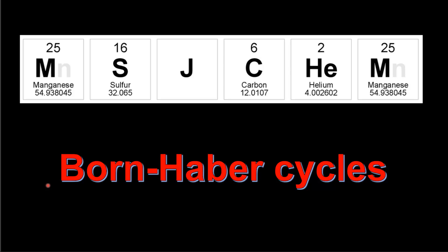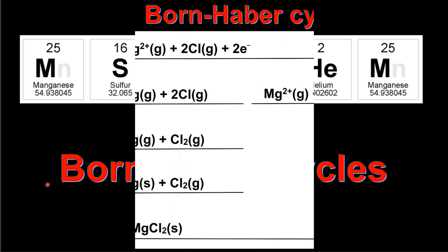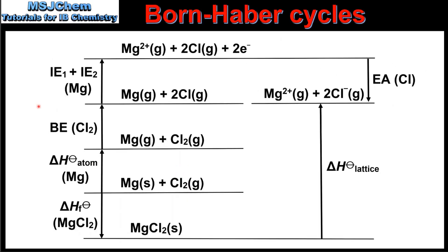This is MSJChem. In this video I will be looking at Born-Haber Cycles. Here we have an example of a Born-Haber Cycle — this one is for magnesium chloride. As we can see, there are a total of 6 steps in the Born-Haber Cycle.